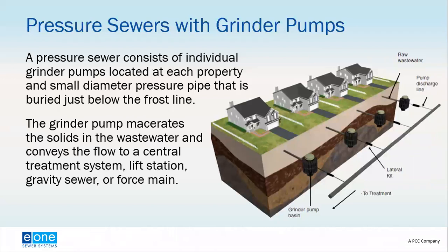With a pressure sewer system, we have individual grinder pumps located at each property and small diameter pressure pipe in the mainline sewer. This pipe is a smaller diameter, flexible pipe that can be buried just below the frost line. Because the grinder pumps are located at each property, you don't have to install the pressure sewer at a constant downward slope — the pumps provide the drive force.